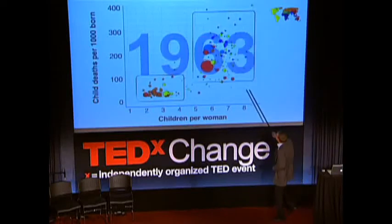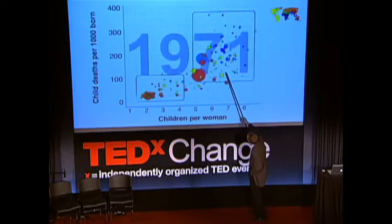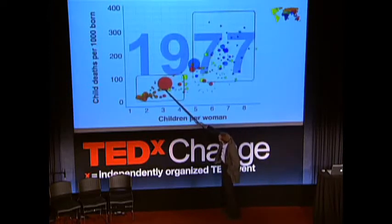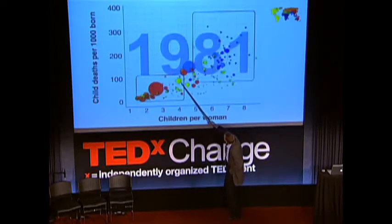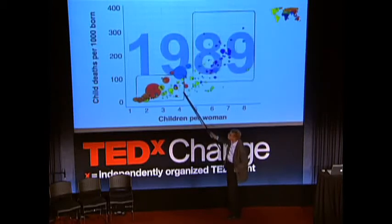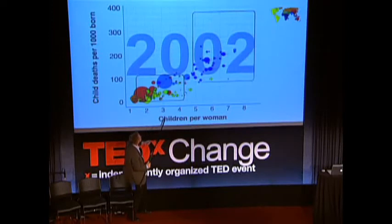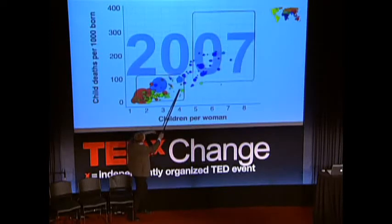Here's what happened as the world progressed: with eradication of smallpox, better education, and health service, things came down. China moved into the Western box, then Brazil, India is approaching it, and the first African countries are coming into the Western box. We get a lot of new neighbors — welcome to a decent life. We want everyone down here. That is the vision we have.